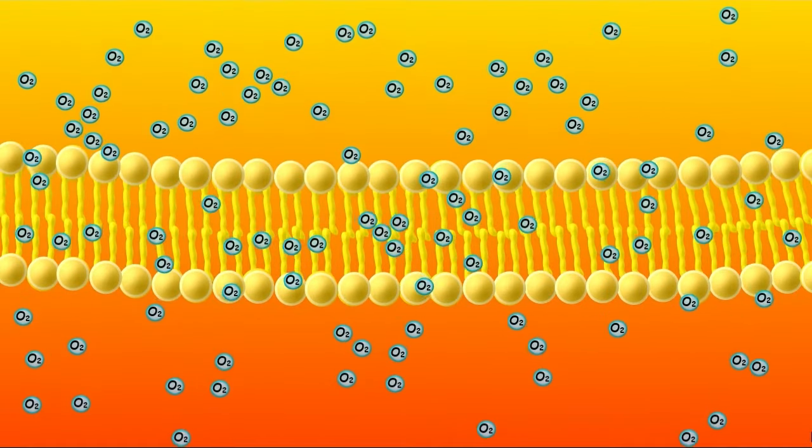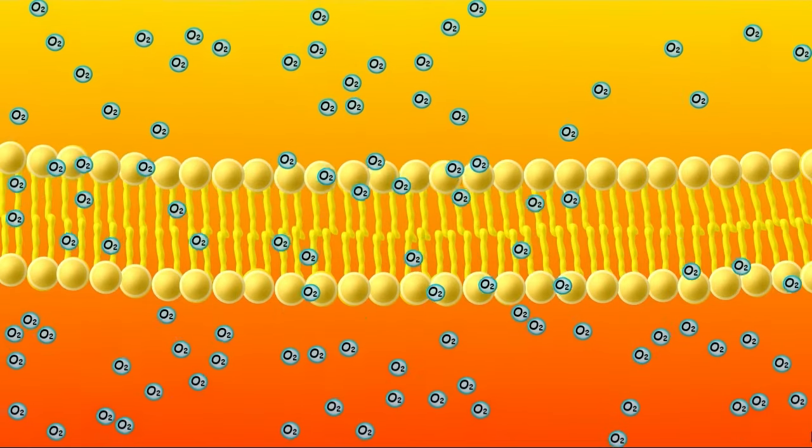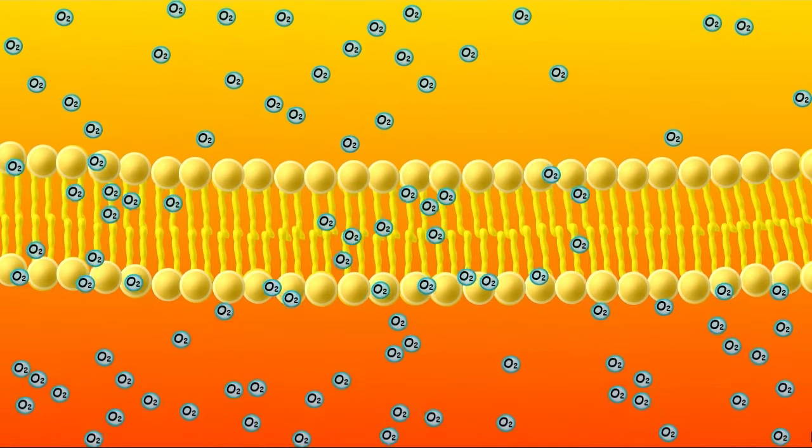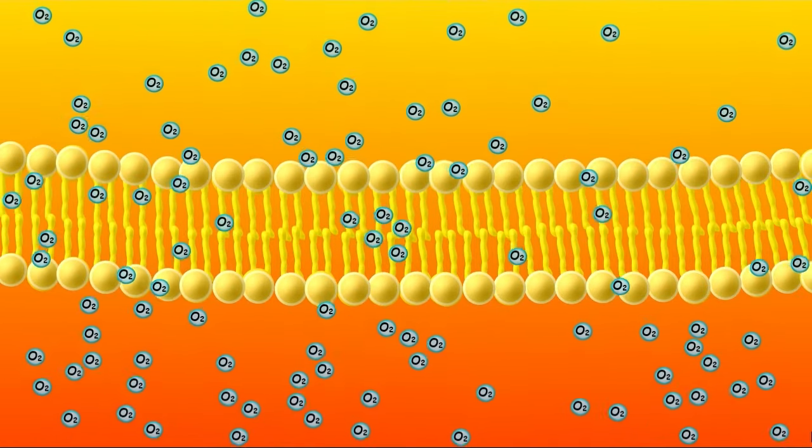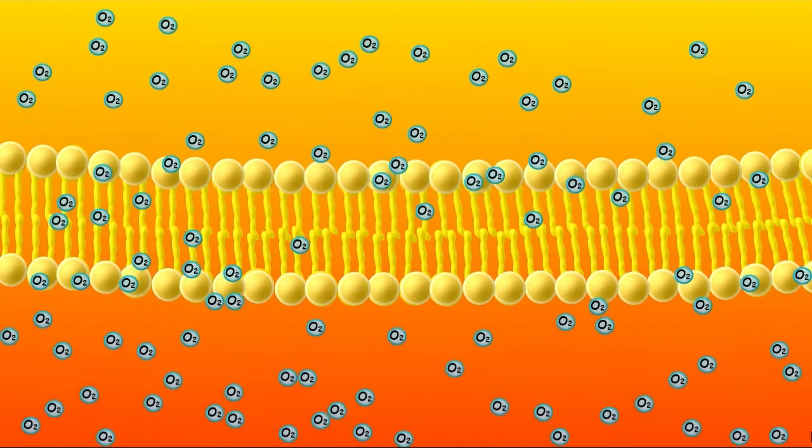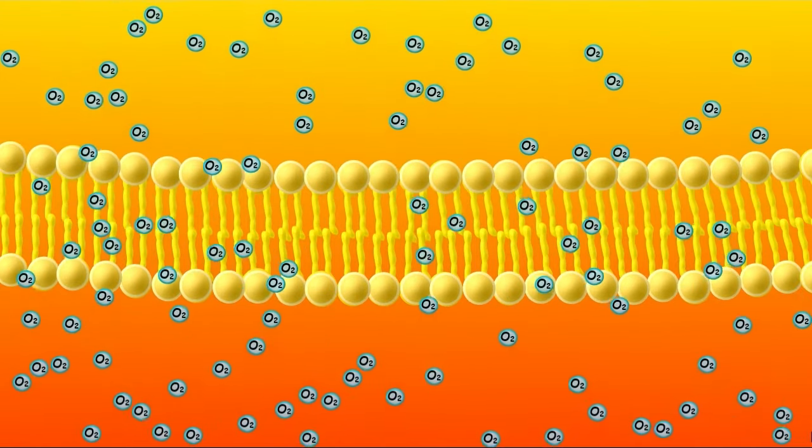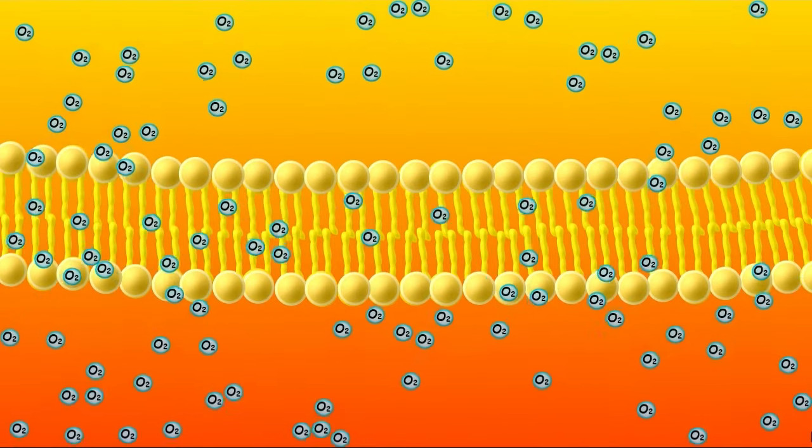So the net movement is from high to low concentration until equilibrium is reached. Equilibrium is when the concentrations on both sides are equal. But notice that movement continues even after equilibrium is reached. For this reason, we sometimes call this dynamic equilibrium. Molecules are still moving, but there isn't a net movement in any particular direction.